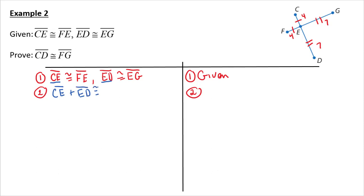Because if two parts of two different segments are equal, and I add them together, then I could say the entire big segments are equal. So if I take and I say CE plus ED is equal to or congruent to FE plus EG. What did I do? I just added the left sides together. And then on the other side of my congruent symbol, I added the right sides together. So what's my reason there? Addition.